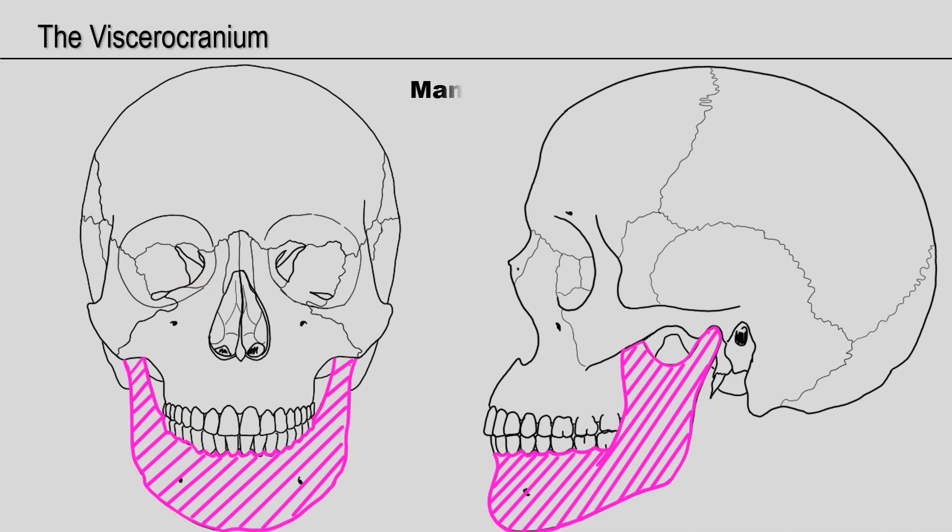The mandible is our next pit stop on our collection of viscerocranial bones. The mandible is another name for the lower jaw. This is not a paired bone. It houses our lower mandibular teeth and plays a pivotal role in mastication or the act of chewing.